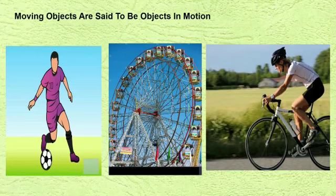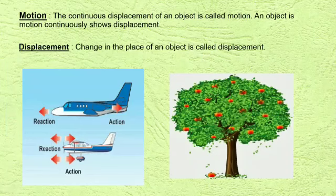So, we can say that in our day-to-day life we see many moving objects. Moving objects are said to be objects in motion. For example, motion of a football, motion of a merry-go-round, motion of a moving bicycle. So, what is motion? The continuous displacement of an object is called motion.